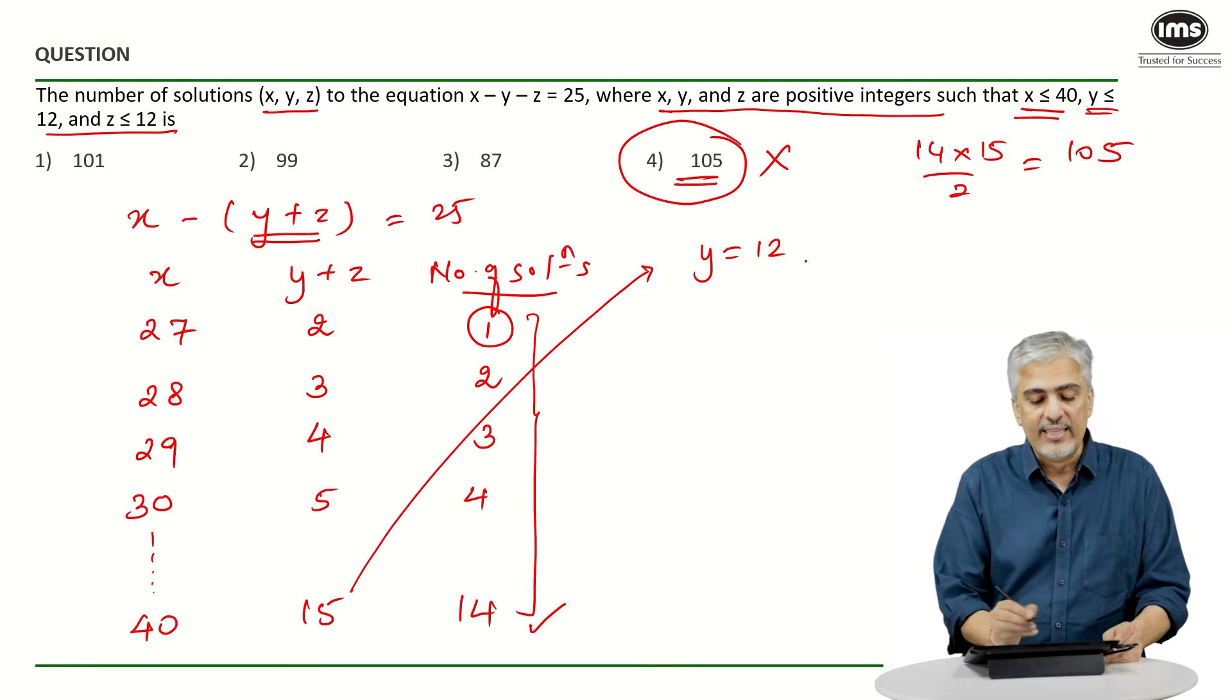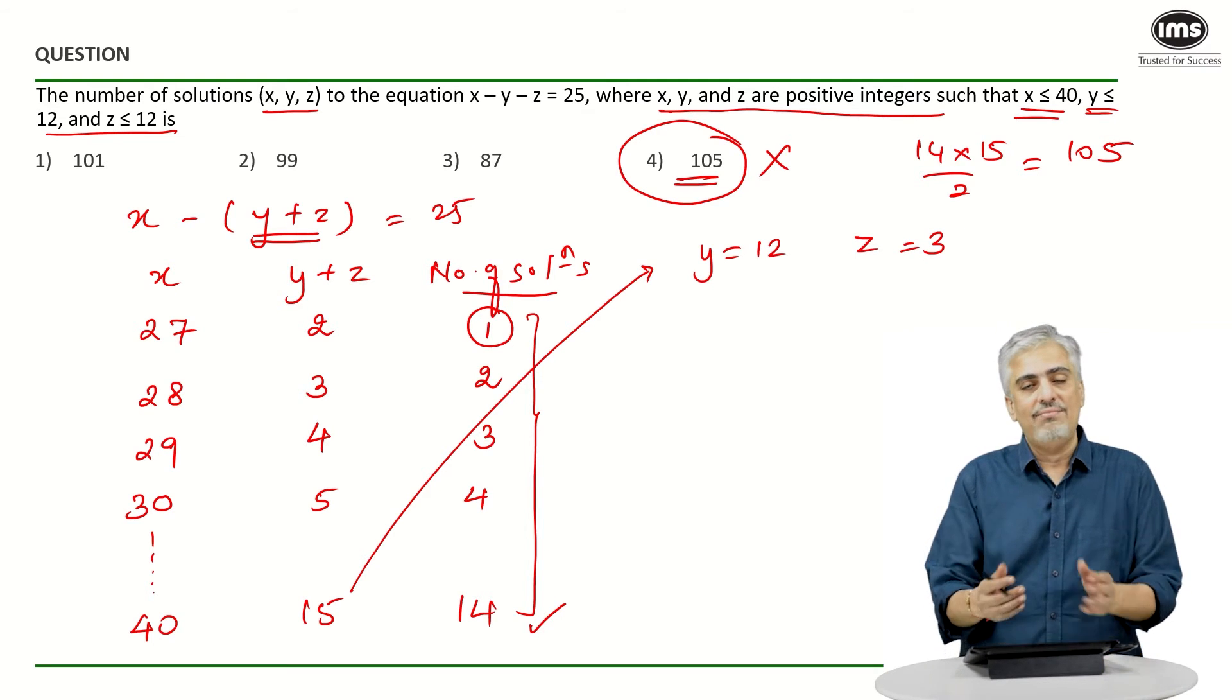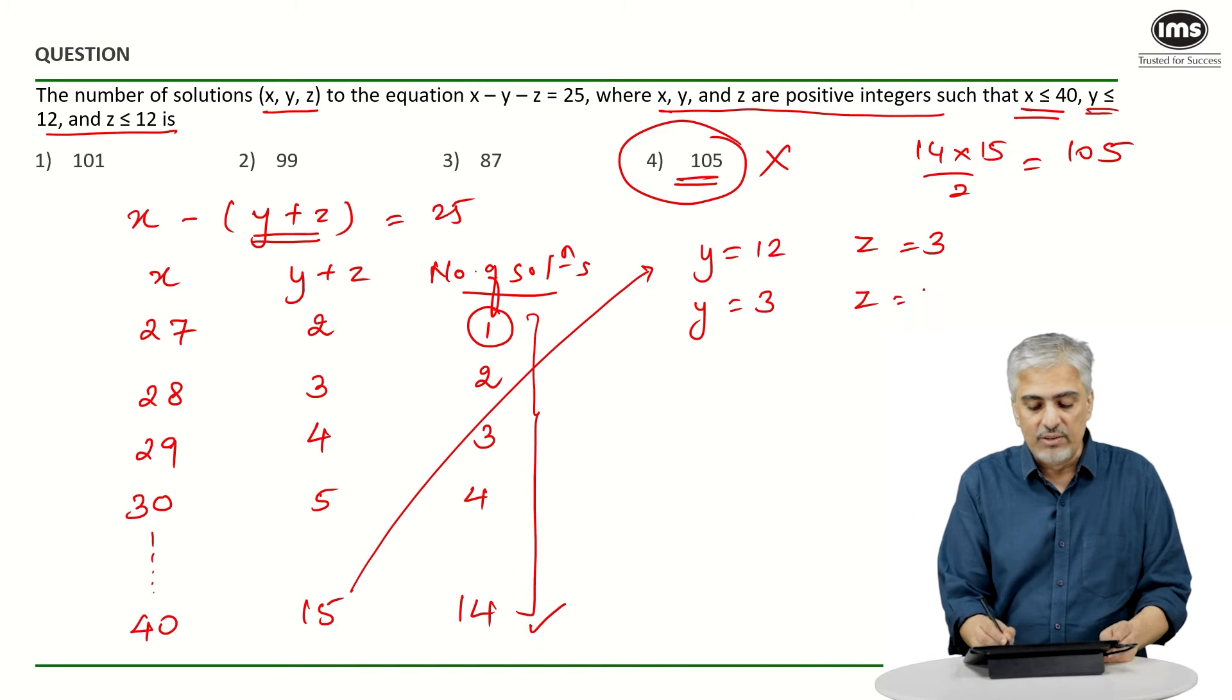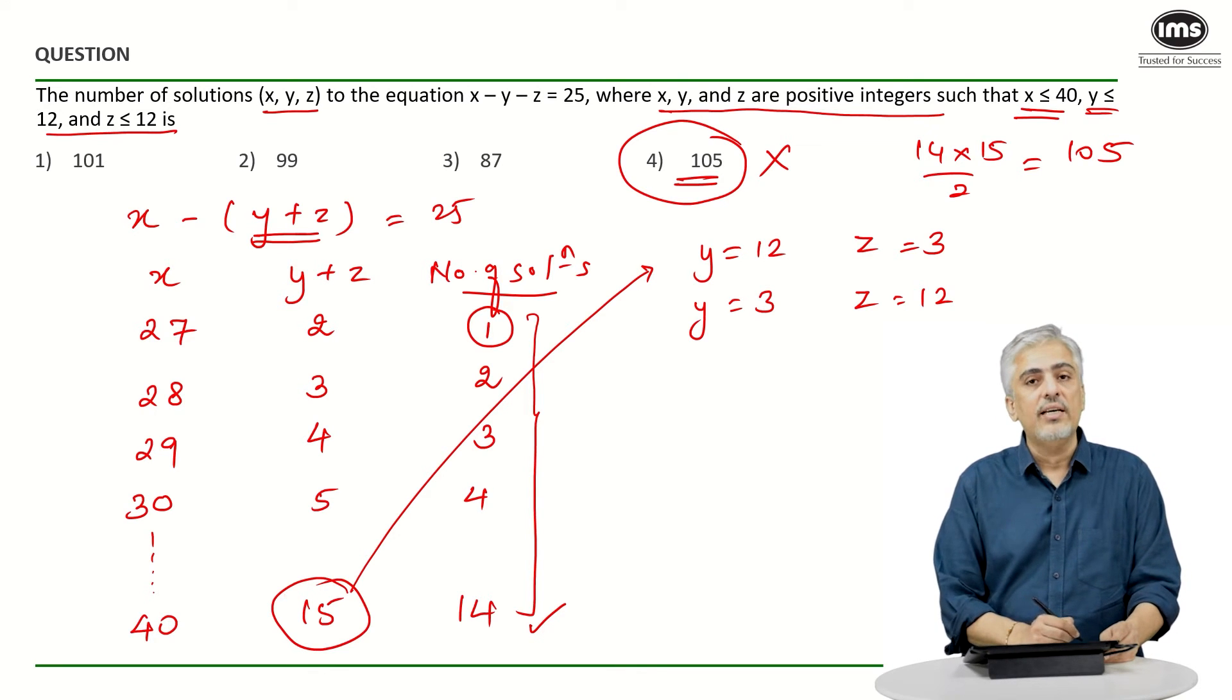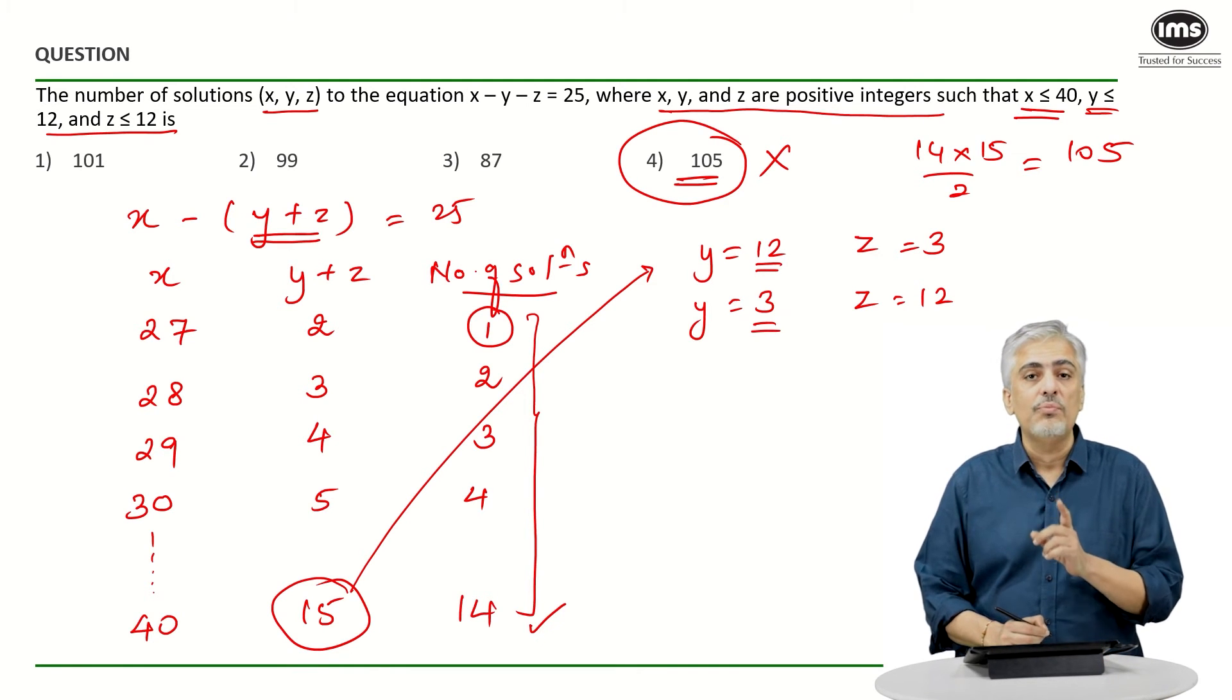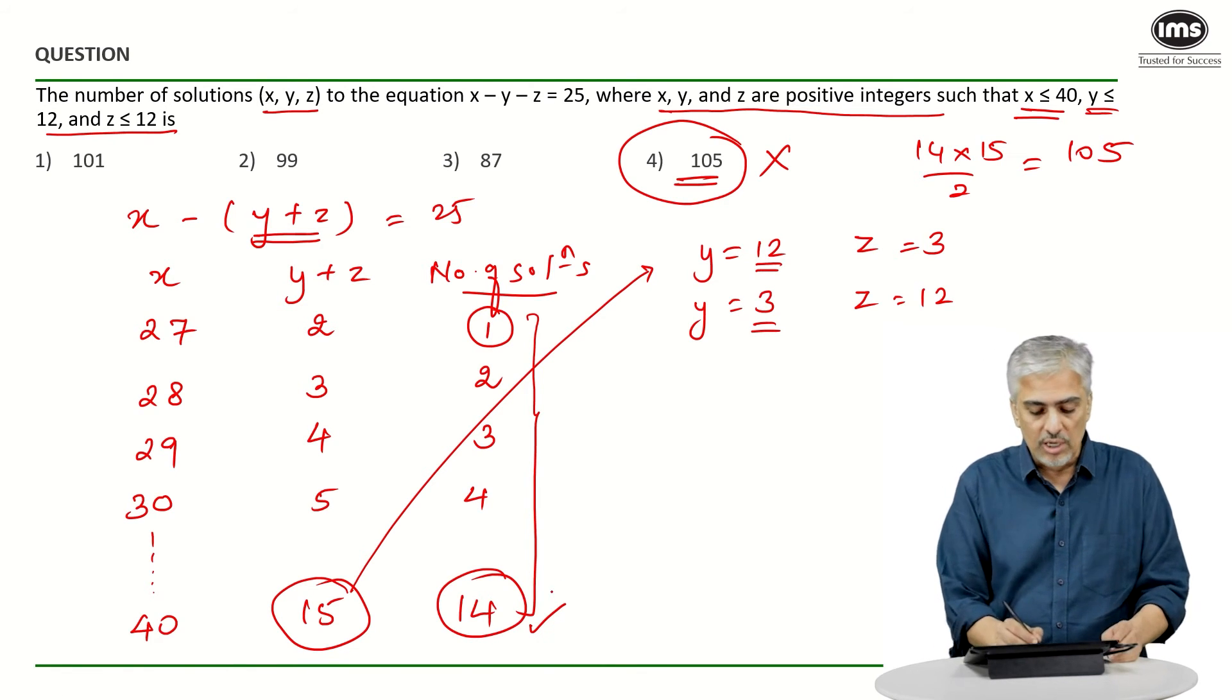When y plus z was 15, what can y take? The maximum value y can take is 12. At that time, z will have to be 3. And the minimum value y will be able to take now will be 3, not 1, because z cannot be 14. At that time, z will be 12. So instead of having 15 solutions, I have solutions only from 3 to 12. Understand this - I have solutions only from 3 to 12, which is 10 solutions.